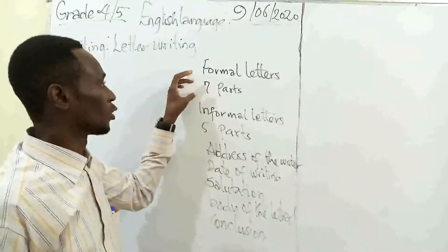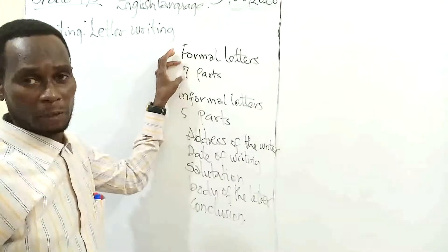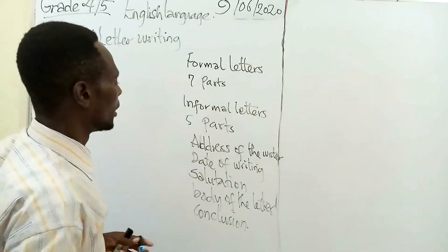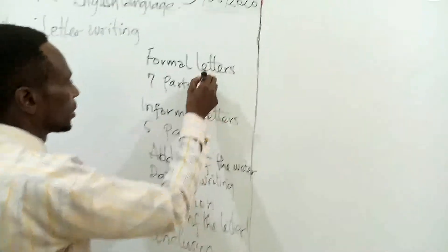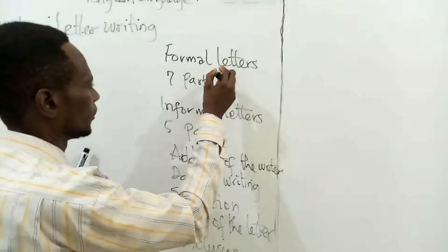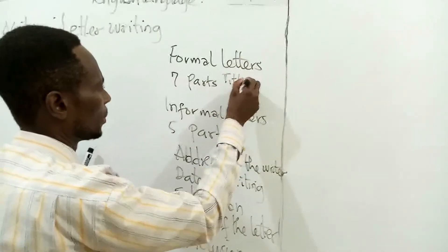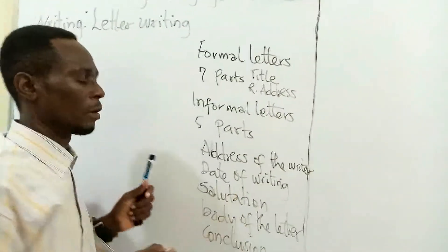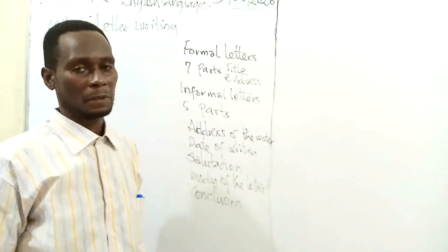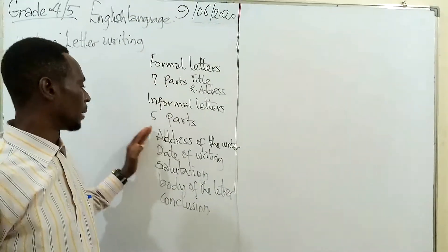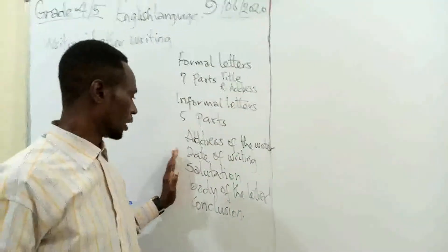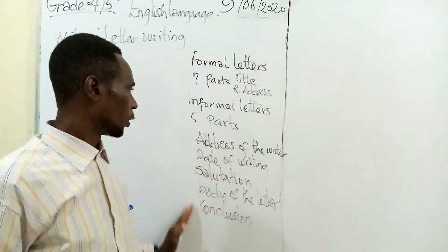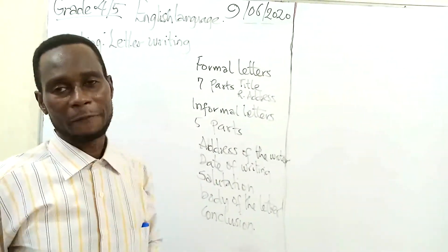Remember that same last week I told you that two parts are added to the informal letter to make formal letters. And what are the two parts? The title of the letter, and the recipient address. The recipient address is the office of the person you are writing to. The title is what the letter is basically all about. Today we are going to be looking at informal letters — the type of letter we write to people who are very close to us.